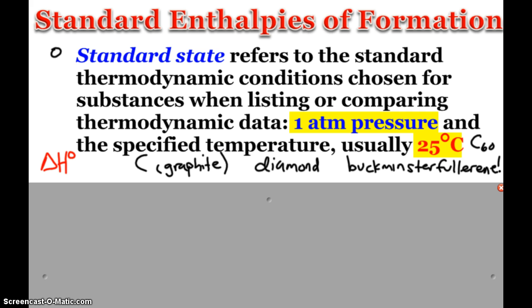So what we end up having is something called the reference form. The reference form of an element is the most stable form both in state and allotrope. The most stable form of oxygen is O2 gas. The most stable form of carbon is the graphite form.